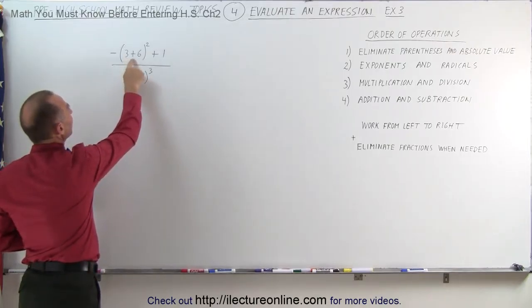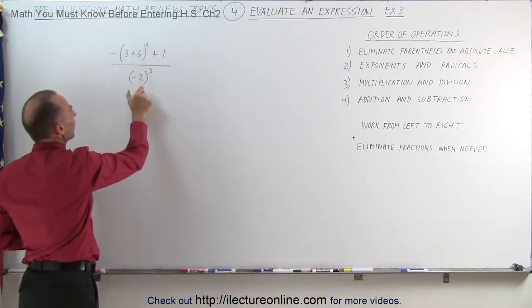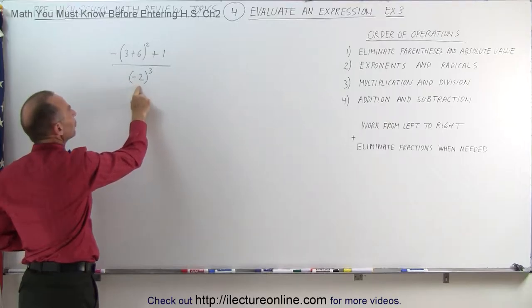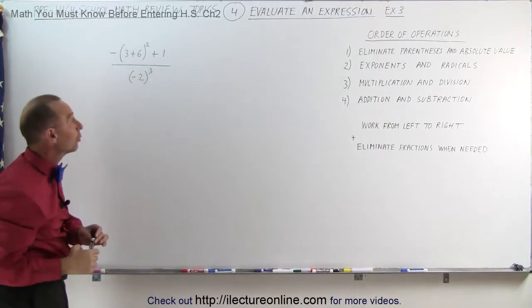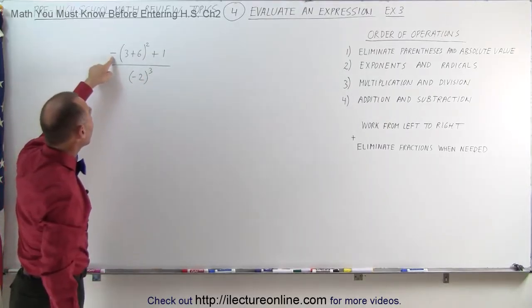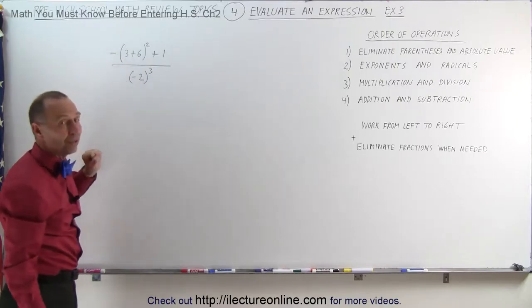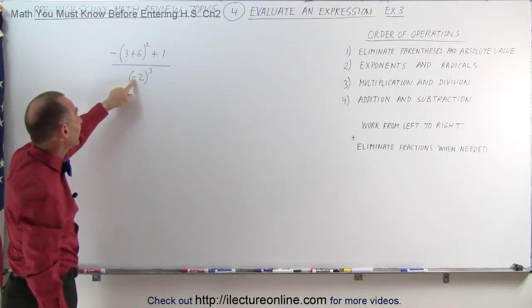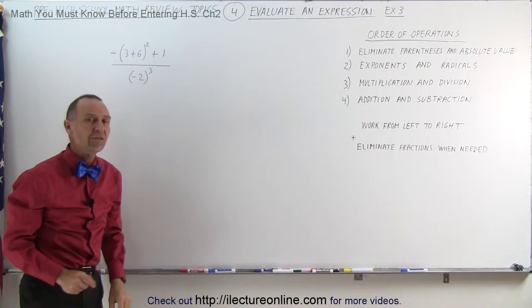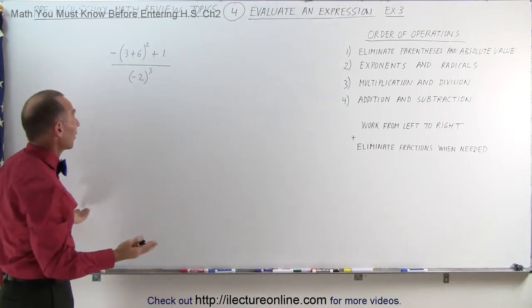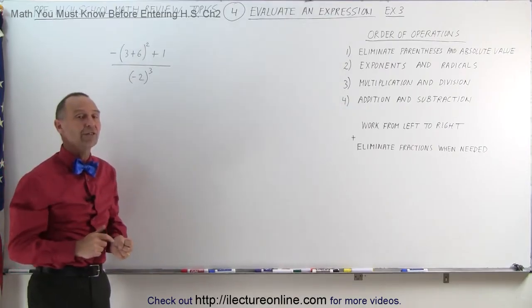Here we have the quantity 3 plus 6 to the second power, and here we have the quantity negative 2 to the third power. Notice that in the numerator we have a negative sign but it's outside the parentheses. In the denominator we have a negative sign but it's inside the parentheses. The question is, does that matter? And the answer is it definitely does.